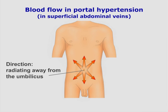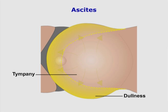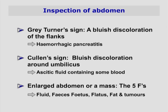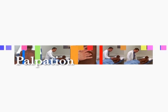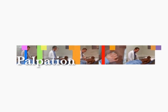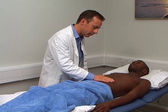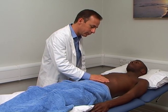In portal hypertension, the venous flow is reversed. Think of the five F's — that is fluid.